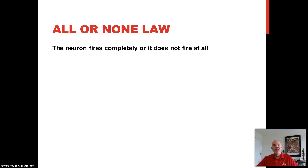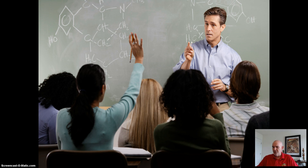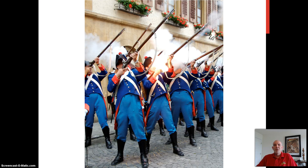The neuron fires completely, or it doesn't fire at all. A neuron fires hundreds of times a second, but it fires at one intensity only. Now, you might be thinking: if this is the case, how does the brain know the difference between an ordinary message and an urgent or emergency message? Well, the nervous system can do one of two things. To begin with, more neurons in the area can fire. Although each neuron is still firing at full strength, collectively there's more power and urgency to the message.